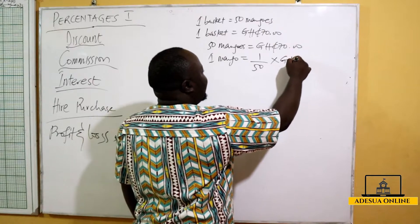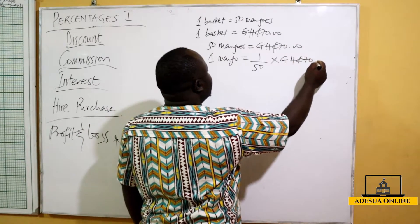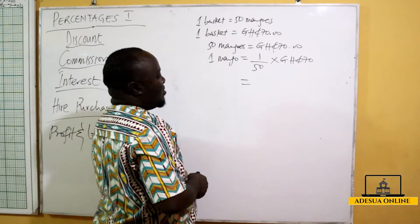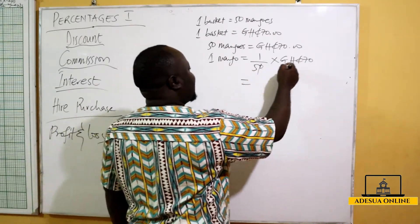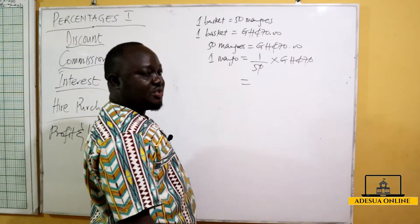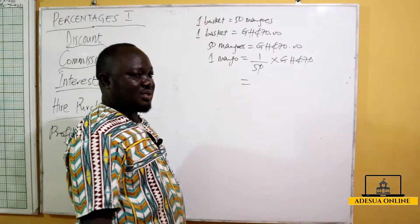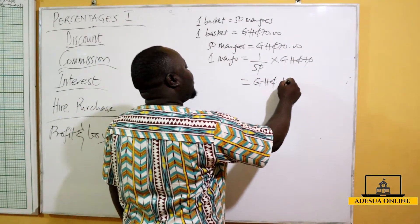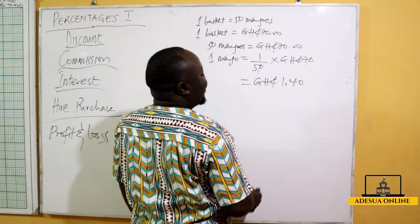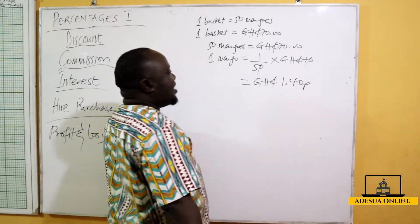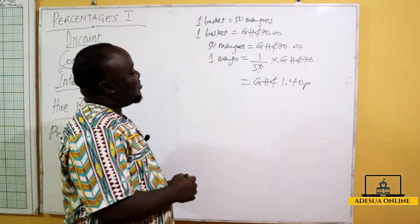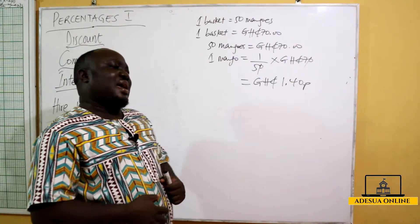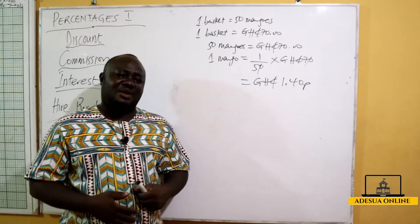So this is going to give me 1 over 50 times 70, which gives me 7 over 5, which is going to give me 1.4. So one cedi 40 pesewas. It means one mango is costing one cedi 40 pesewas.